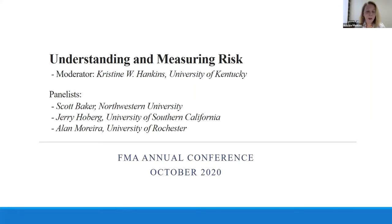We have Scott Baker from the Kellogg School. Scott is an expert in how both households and corporations respond to income fluctuations and uncertainty. We have Jerry Hoberg from the Marshall School at USC. While Jerry writes very widely in corporate finance, he is really well known for his work in product market and disclosure research, and he is also the recipient of many large NSF grants.